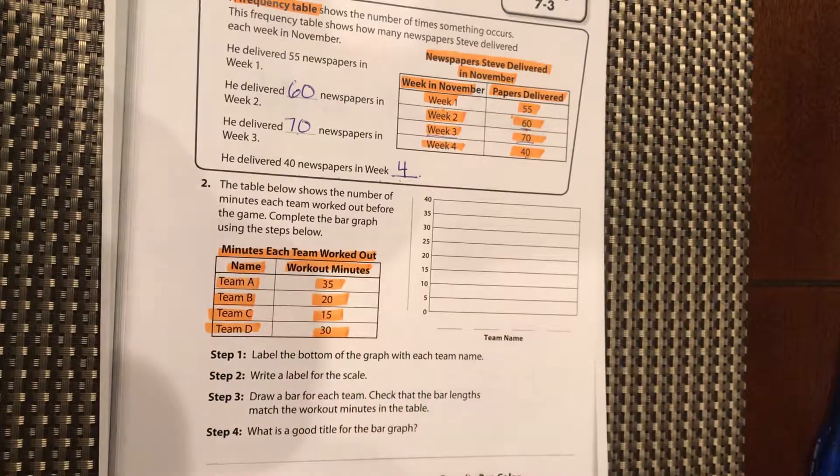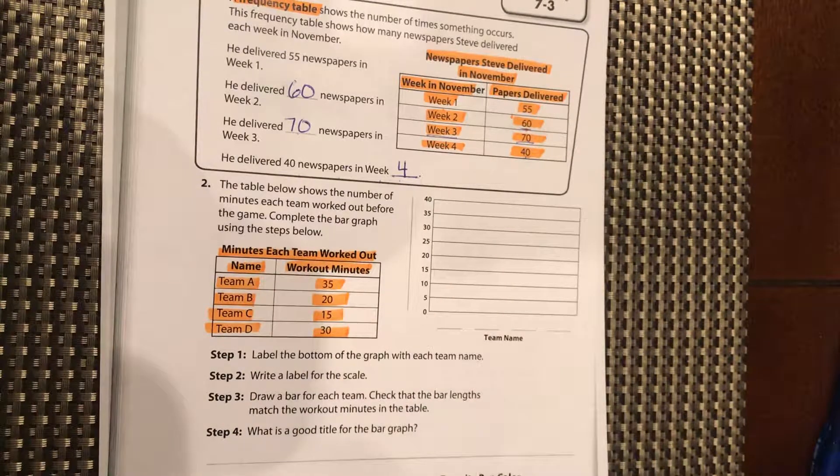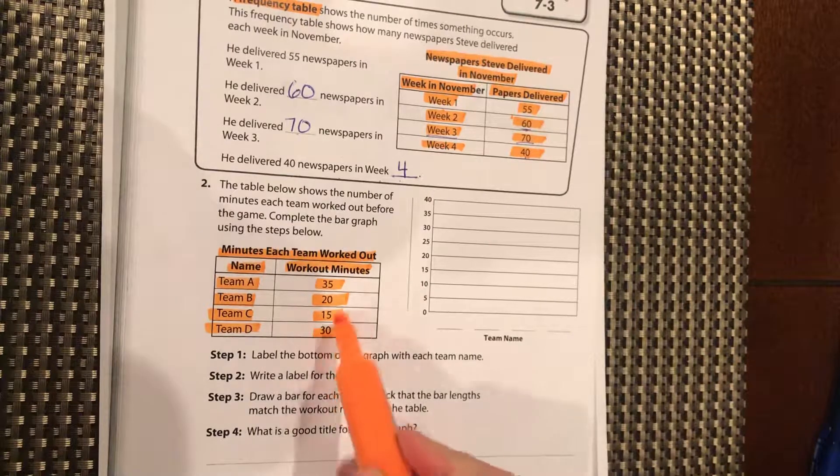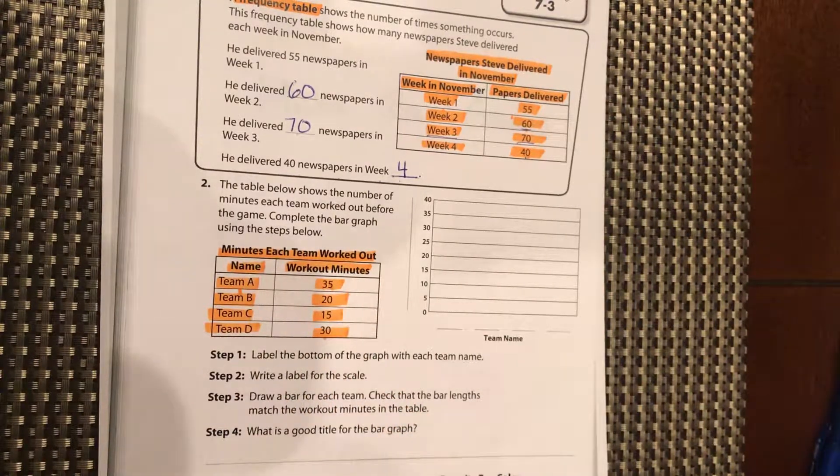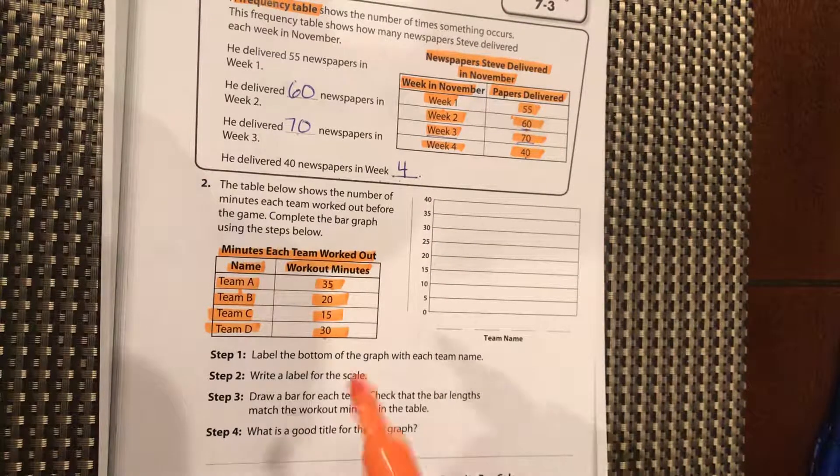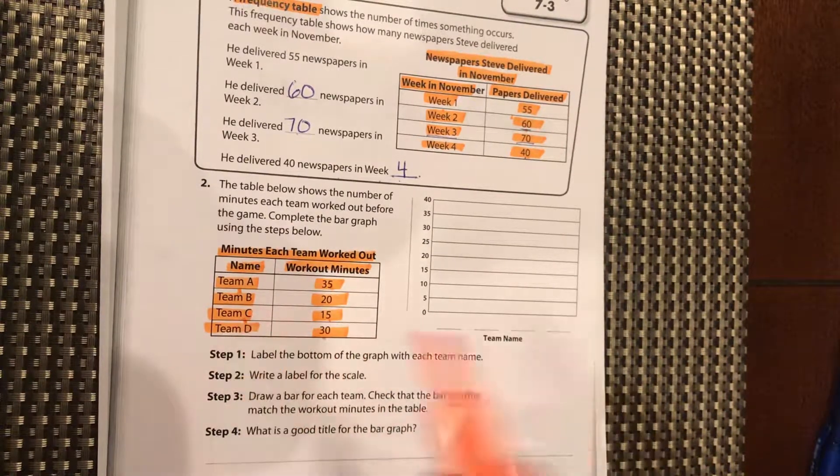Just in looking at this, you should be able to spot right away which team worked out the longest. Should be team A. Which team worked out the shortest amount of time? Should be team C, 15 minutes.